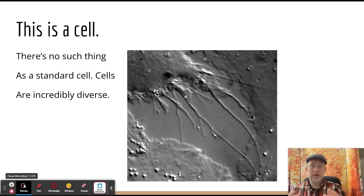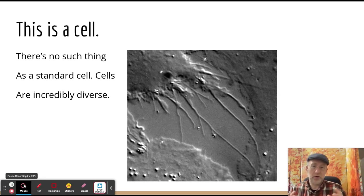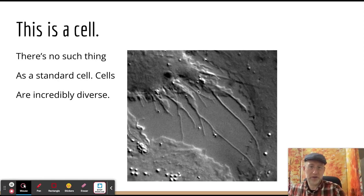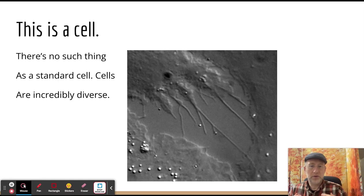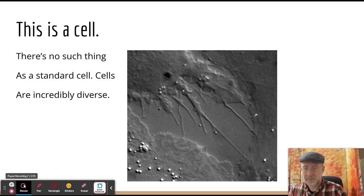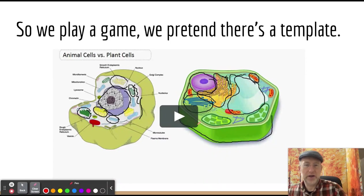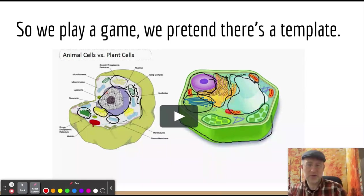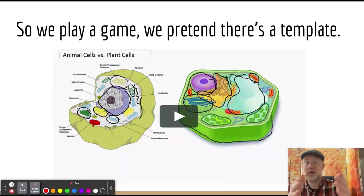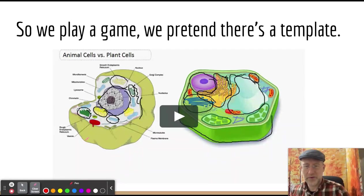Starting with a cell — there is no such thing as a standard cell. Cells are incredibly diverse. This is actually a macrophage eating some other cells. As biologists, we play a game. We say, look at all the similarities between an animal cell here and a plant cell here, how they share different characteristics and how they're very similar. We've basically taken all animal cells and made them look like one cell, and all plant cells to look like one cell, and then we said, look how similar they are — these two stereotypes we've made of these two cells.